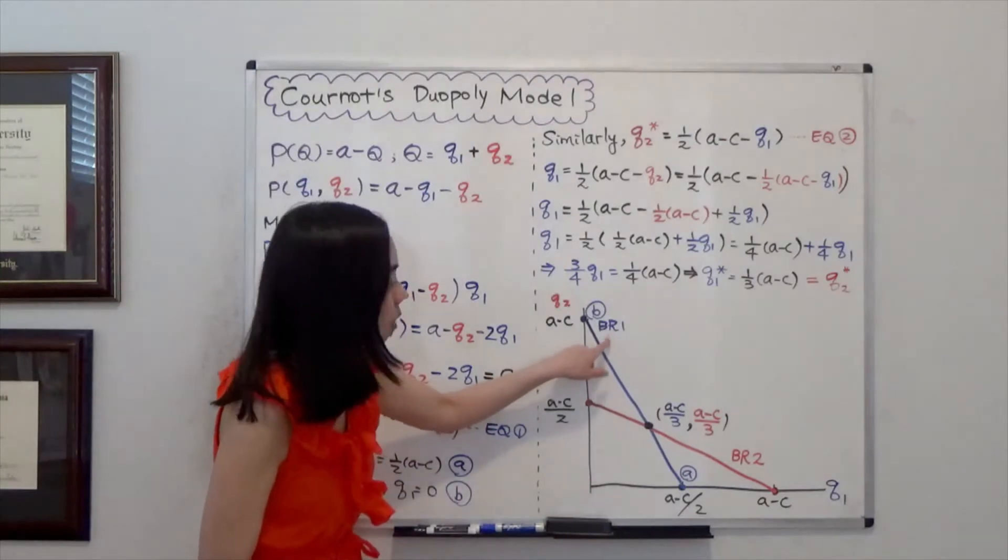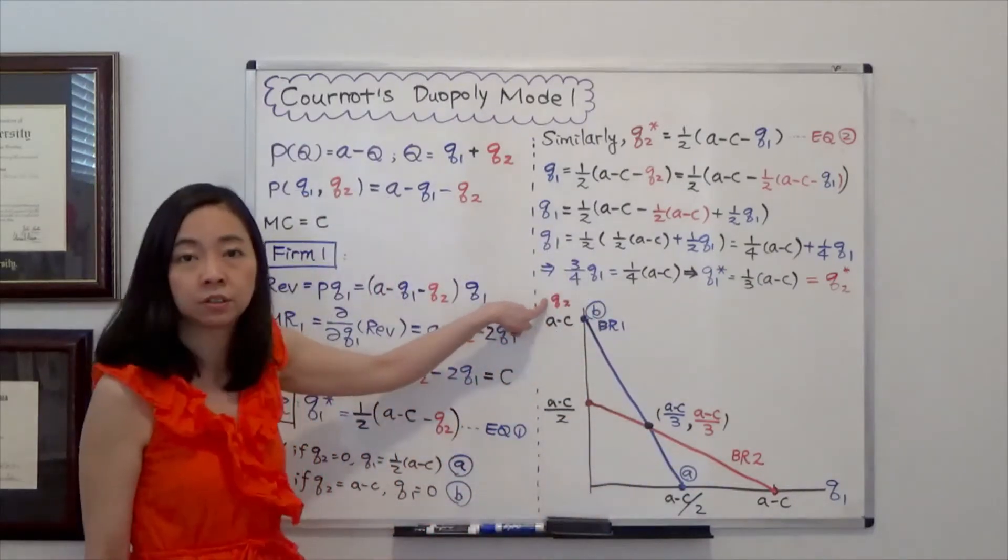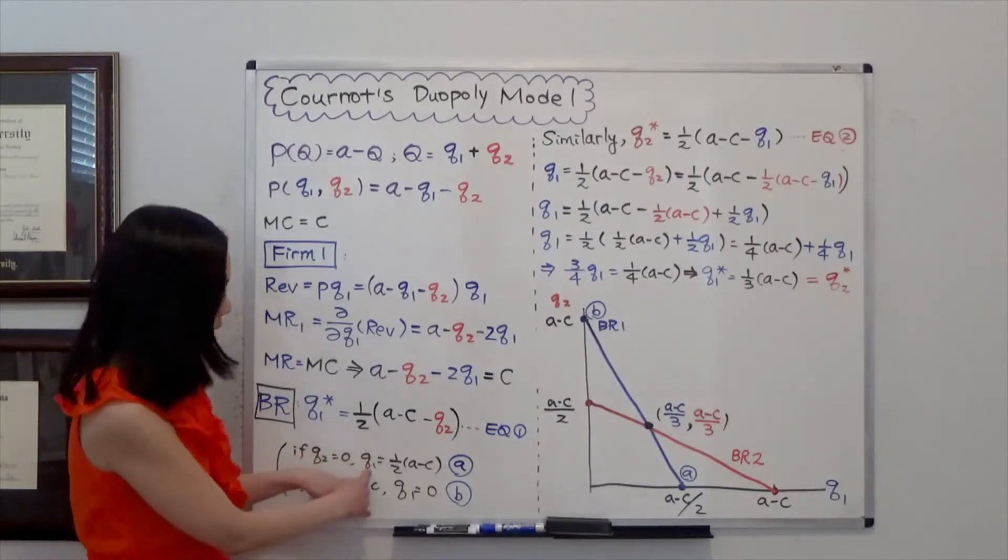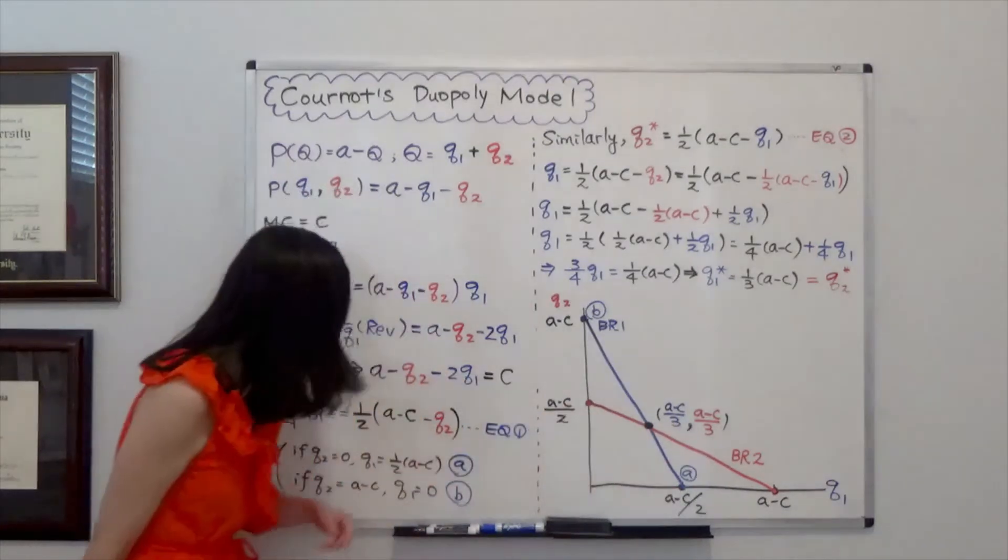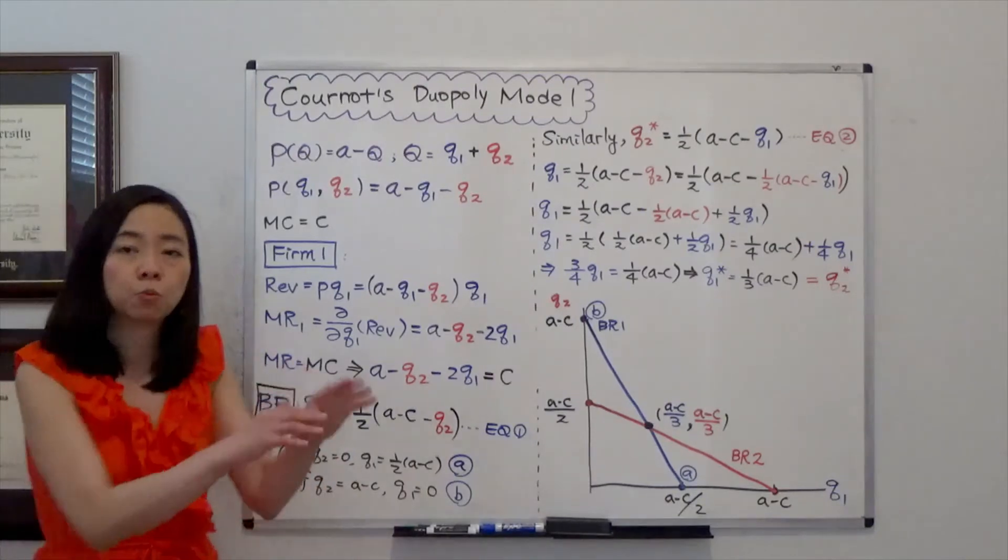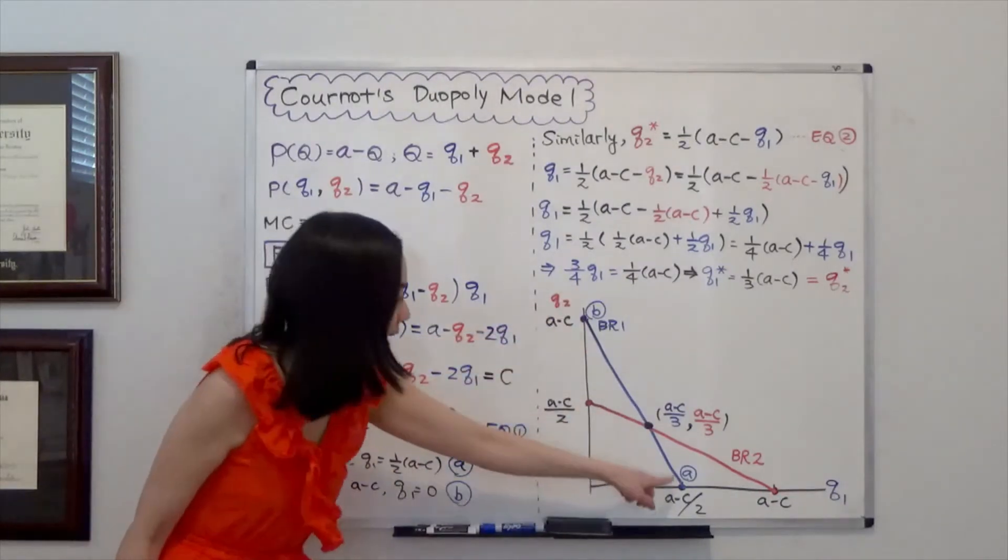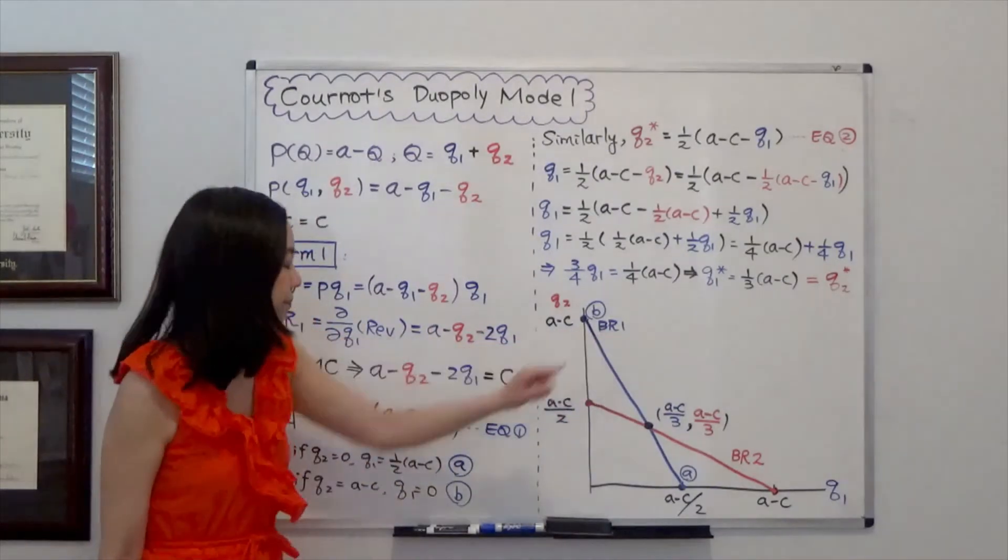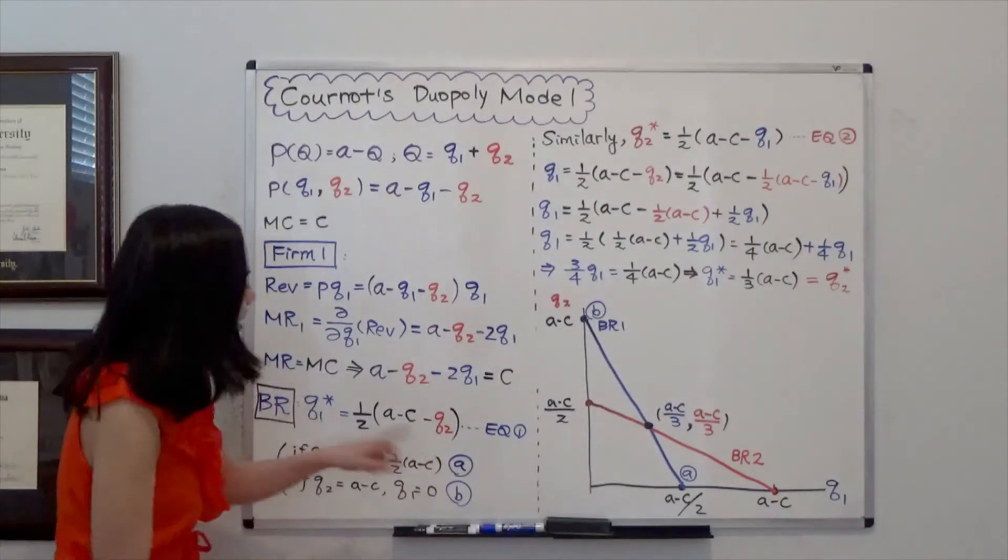Indicating BR1 here. So let Q1 be on the horizontal axis and Q2 be on the vertical axis. So you can see that if Q2 is equal to 0 then Q1 will be equal to a half times A minus C. And that's point A here. And if firm 2 is producing a half times A minus C then firm 1 is going to say I'm not going to produce anything anymore. So that will be point B. Connect the two points that will be the best response curve for firm 1. We call that BR1. And we can call this best response function as equation 1.